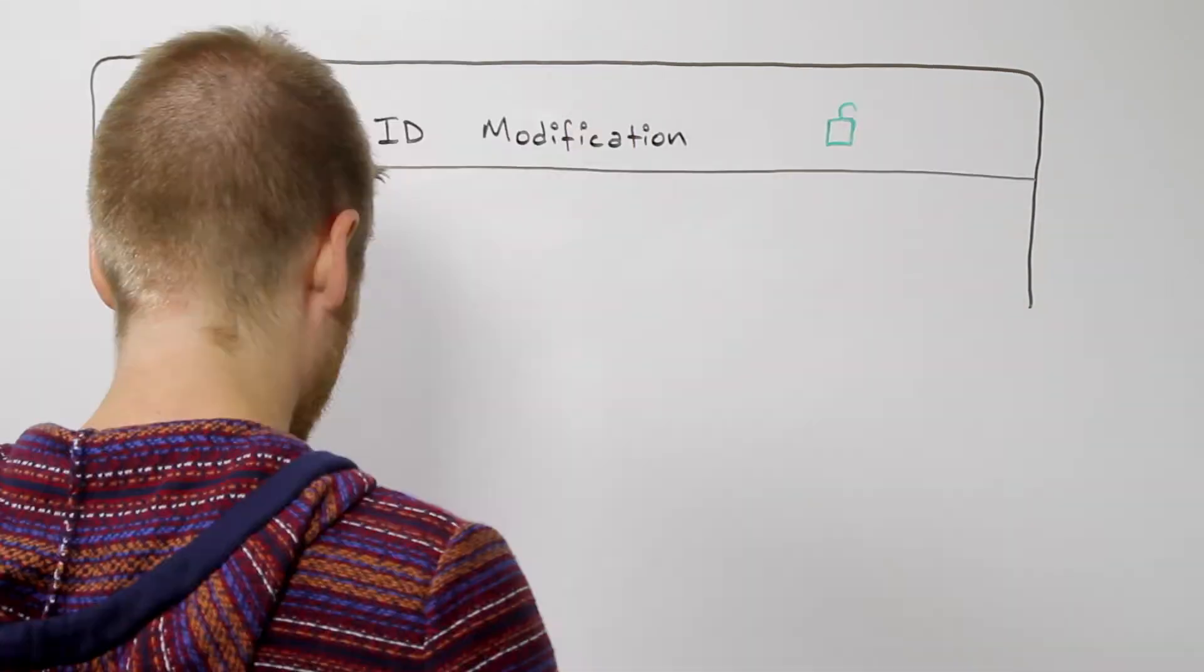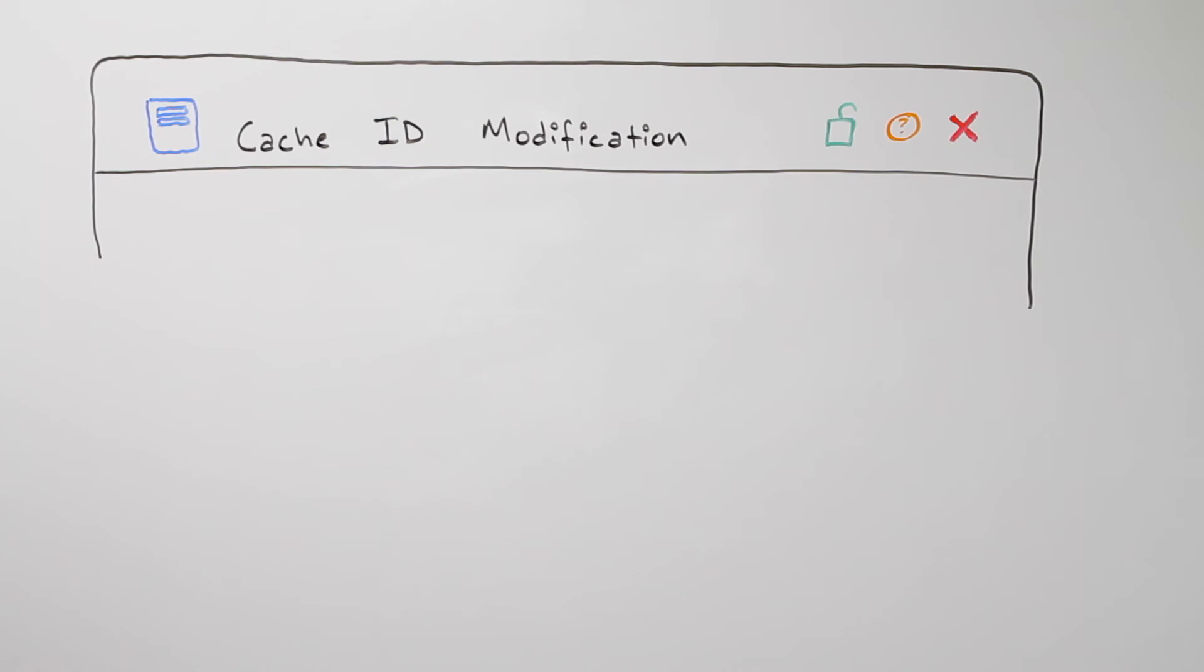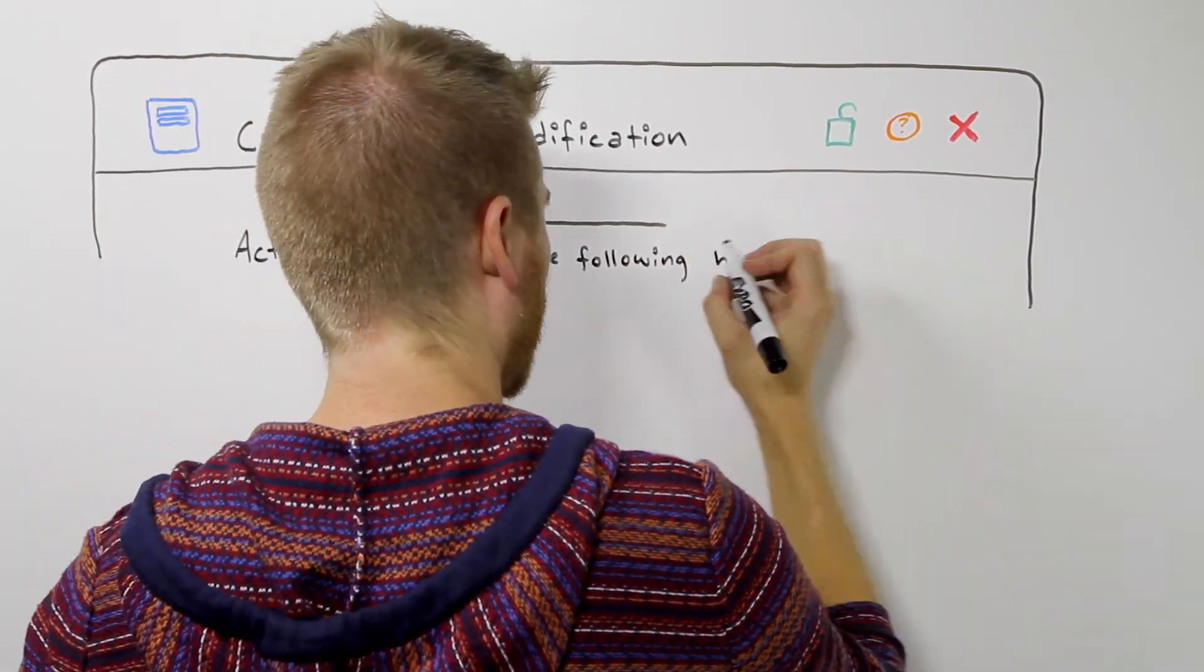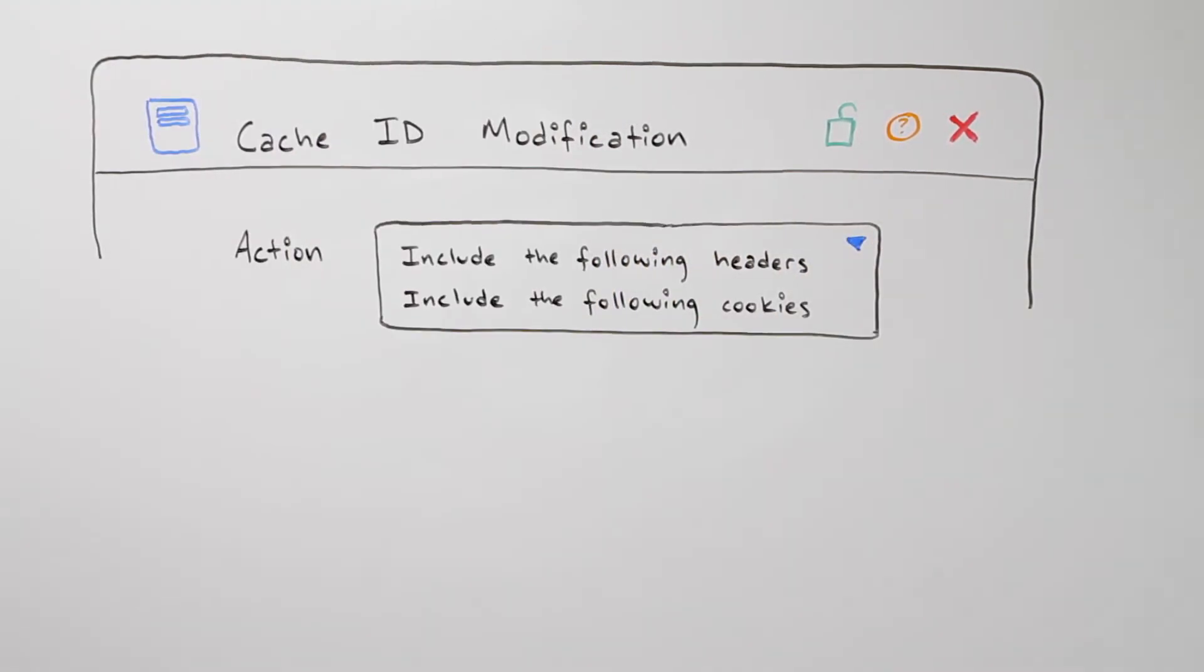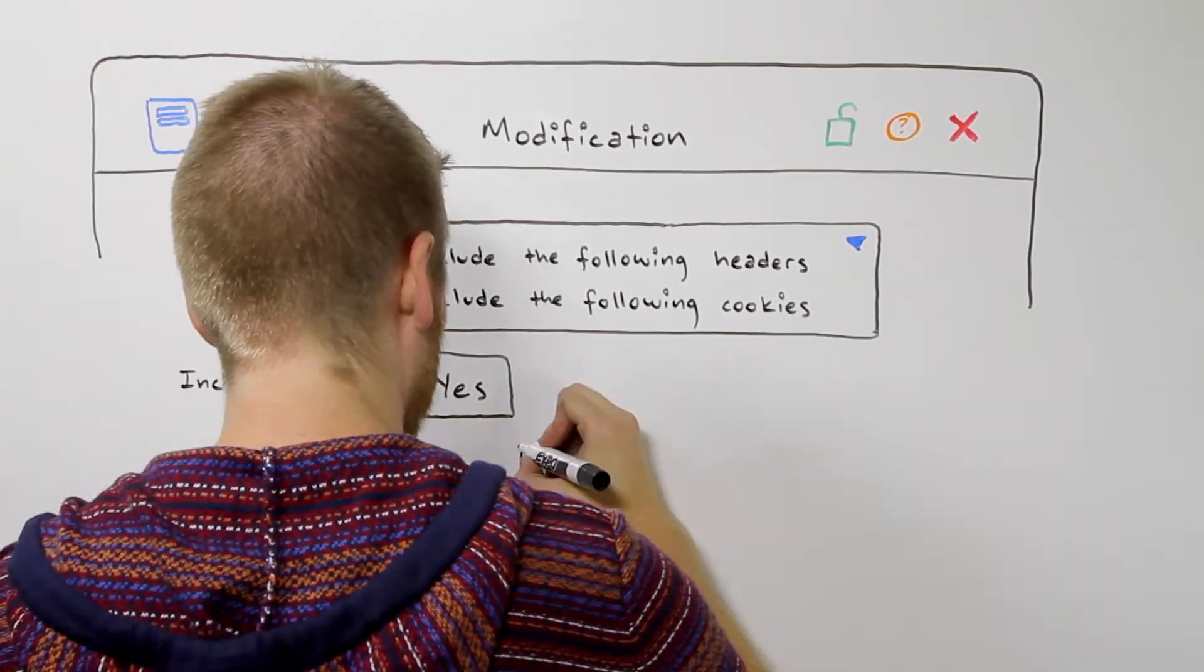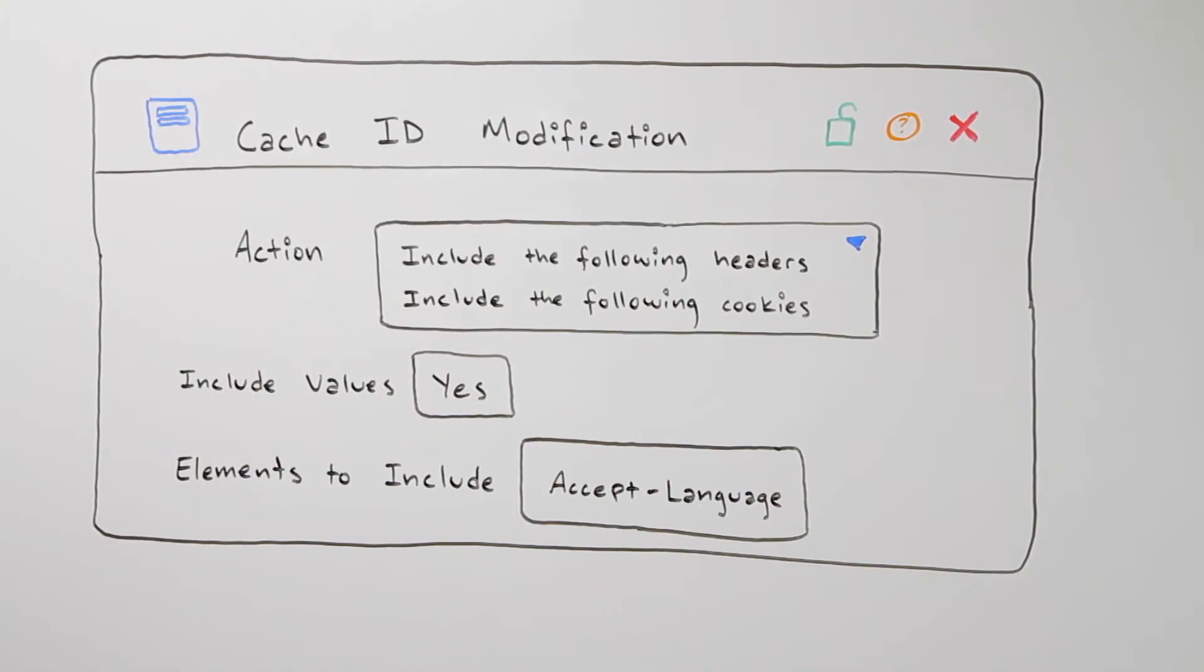This behavior allows the value of any specific header or cookie to be added to the cache key. A good example would be using the accept language header to cache different versions of a single URL that's been localized.